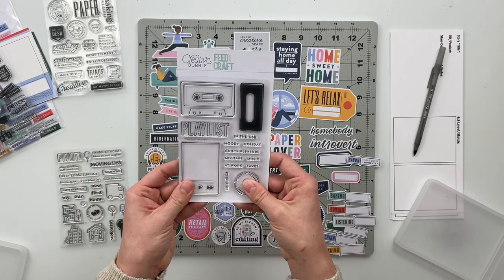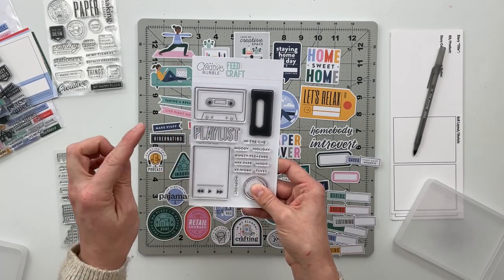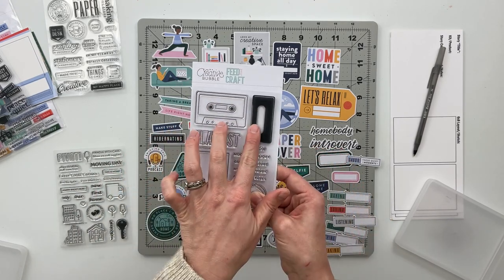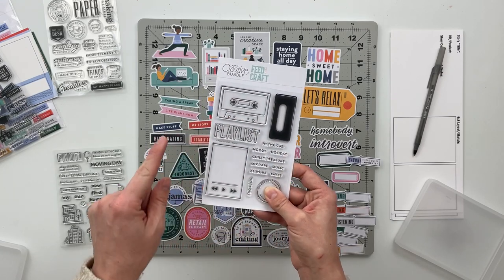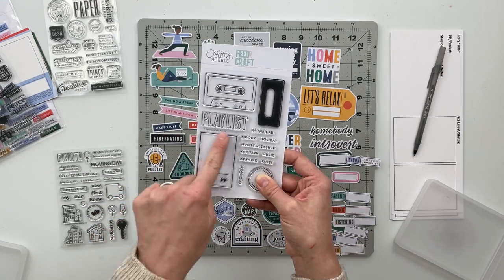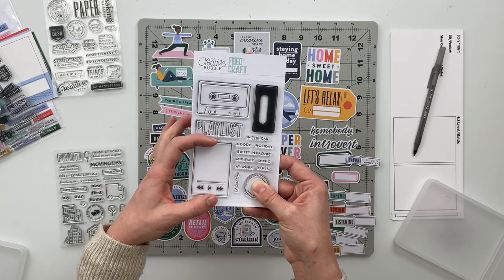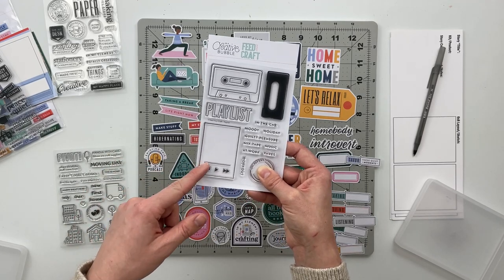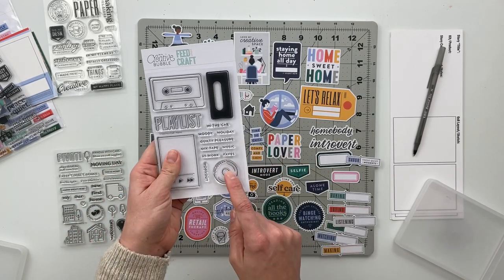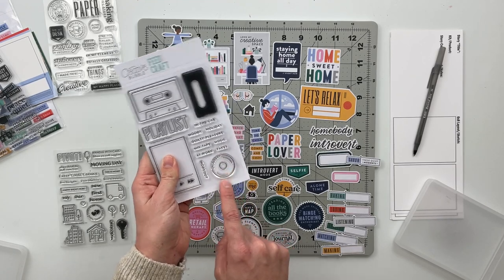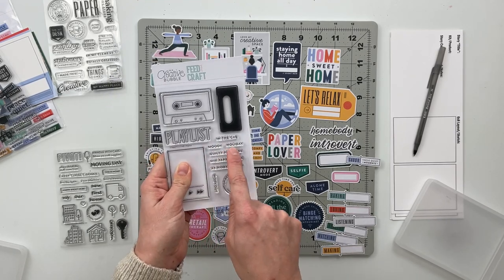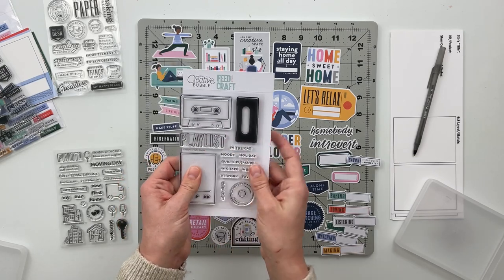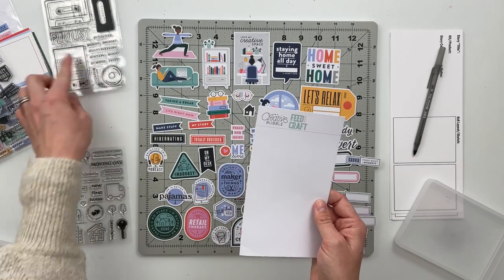We've got this one is one of my favorites. So it's playlist. And we've got both the old cassette tape with the filler portion, which I'm dying over this. I just, I love that so much. And then we also have like the screen cover for a Kindle almost, or like an iPad for listening, listening to music that way. And then things like on repeat, which is, you know, like a record looking. We've got workout in the car, moody holiday, guilty pleasure, mixtape music at work, and faves. And then playlist. Love this so much. So that one is called playlist.